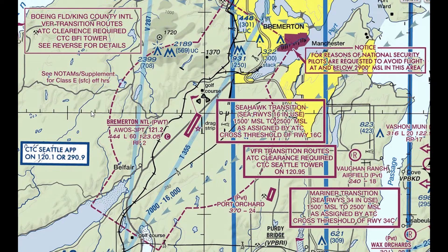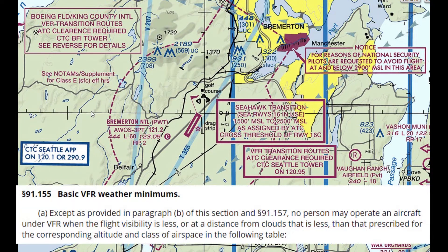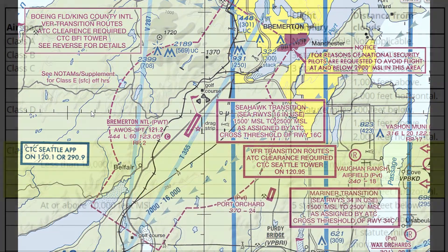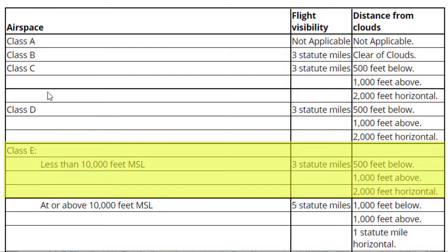We'll use Bremerton National Airport west of Seattle as the example for this exercise. It's a typical non-towered airport with Class Echo airspace to the surface. Remember that 14 CFR 91.155 specifies the basic VFR weather minimums for all types of airspace, including these basic criteria for Class Echo airspace.